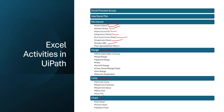In the range category we have write data table, read range, append range, filter, autofit, sort range, clear sheet, and remove duplicates. In the cells category we have get cell color, read cell formula, read cell value, write cell, and autofill. In the chart category we have get chart, insert chart, and update chart. Let's explore these one by one — we'll go to UiPath again.